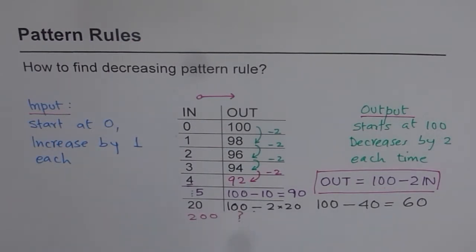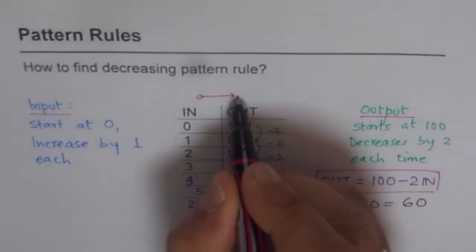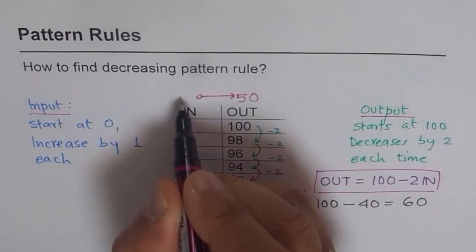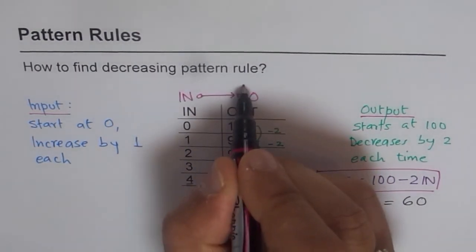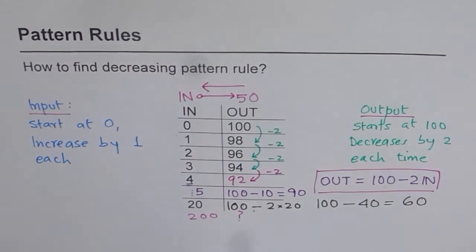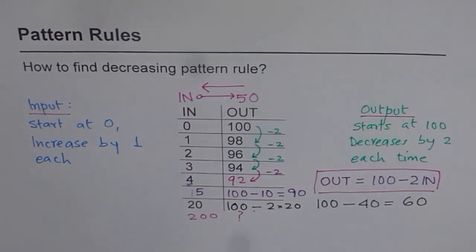Now, tell me something. If I have a number in the output as 50, then can you find the input for that? That means the reverse thing. Well, that is an exercise for you to do. Try it out and let me know the answer. Thank you and all the best.